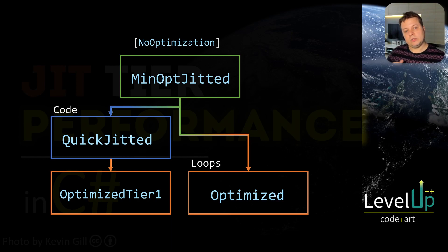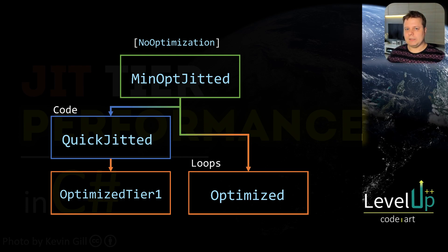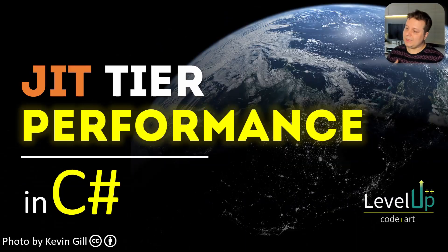The cold start problem will be significantly less. And if we determine that a method is a hot path, we can transition the method from tier 0 to tier 1, meaning that now all of the optimizations are turned on. And that's really awesome.